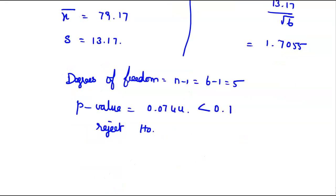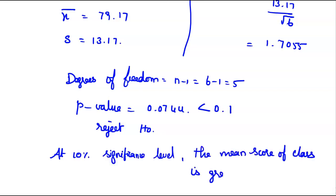Therefore we can conclude that at 10% significance level, the mean score of class is greater than 70.